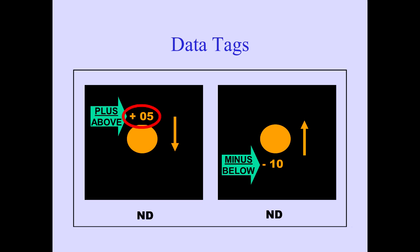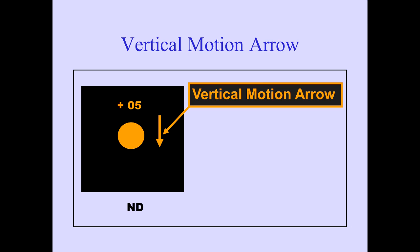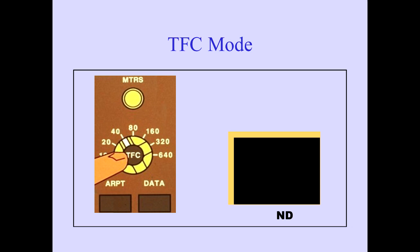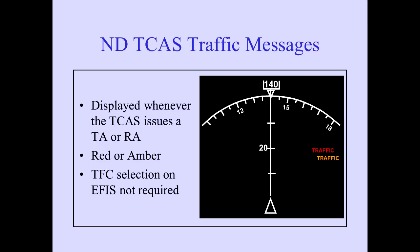The left example indicates 500 feet above, and the right example indicates 1,000 feet below. An arrow is displayed to the right of the traffic symbol if the vertical speed of the traffic is greater than 500 feet per minute. TFC must be selected on the EFIS control panel to display TCAS symbols and data on the ND. The TFC mode message will appear when the selection is made. Whenever an RA or TA is issued by TCAS, a red or amber traffic message is also displayed on the ND.